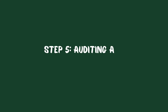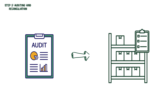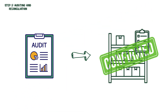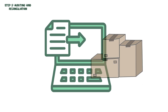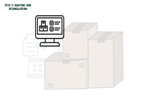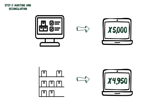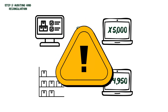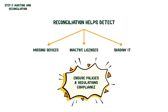Step 5: Auditing and Reconciliation. Even with careful tracking, discrepancies can happen. Regular audits make sure your records match what's actually in your inventory. Reconciliation is about comparing your records with reality — for example, if your system shows 5,000 laptops but only 4,950 are accounted for, you can investigate and correct the difference. This helps detect missing devices, inactive licenses, or shadow IT, and ensures compliance with policies and regulations.